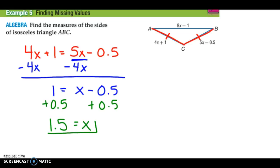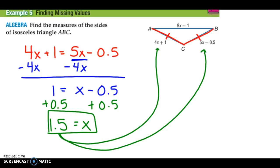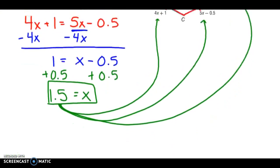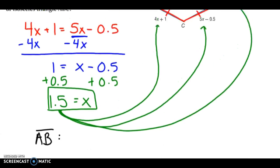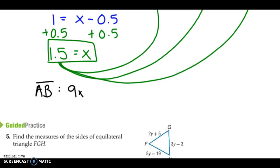So now that I know that X equals 1.5, I can take this and plug it in for X. Plug it in for X, and plug it in for X to find all three side measures. First one, AB. AB is the length 9X minus 1. So what I do is I put 9 times 1.5 minus 1. So 9 times 1.5 is going to be 13.5 minus 1. AB is 12.5.